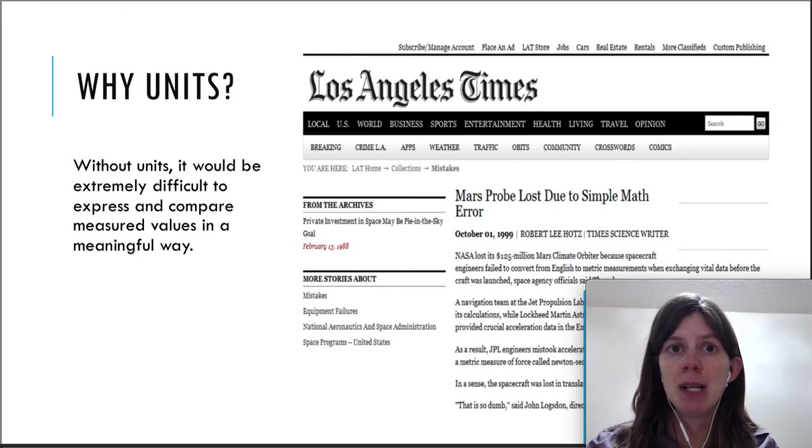What happened was there were two different teams of scientists. One used metric units, one used English units. So there was some miscommunication when they sent the Mars probe and they sent it to the wrong elevation and it crashed, resulting in a loss of $125 million.